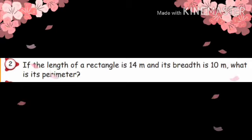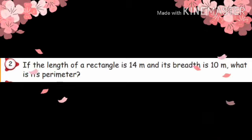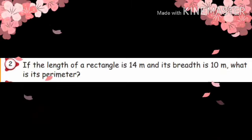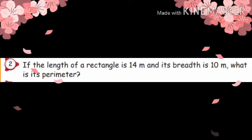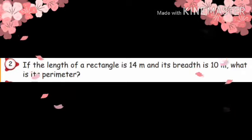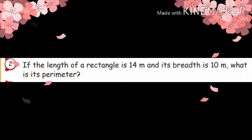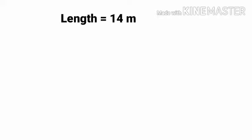Second sum: If the length of a rectangle is 14 m and its breadth is 10 m, what is its perimeter? The rectangle is 14 m by 10 m and we need to find the perimeter. So length equals 14 m, breadth equals 10 m.